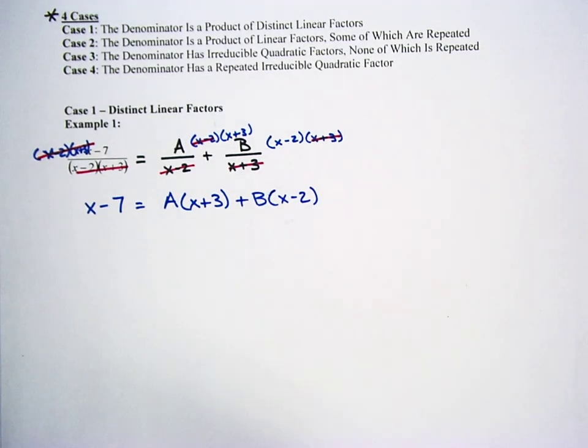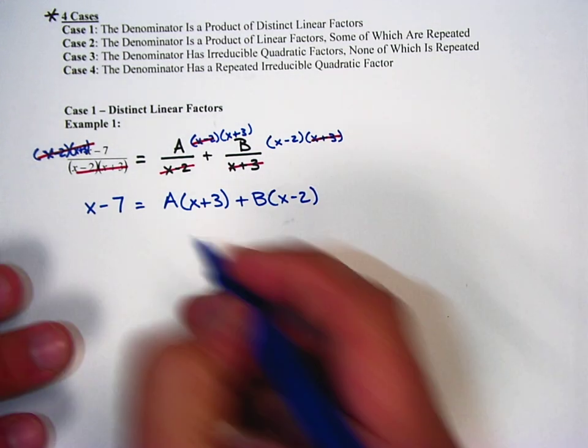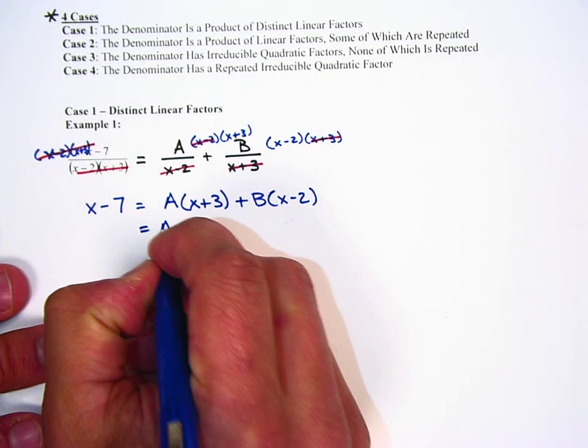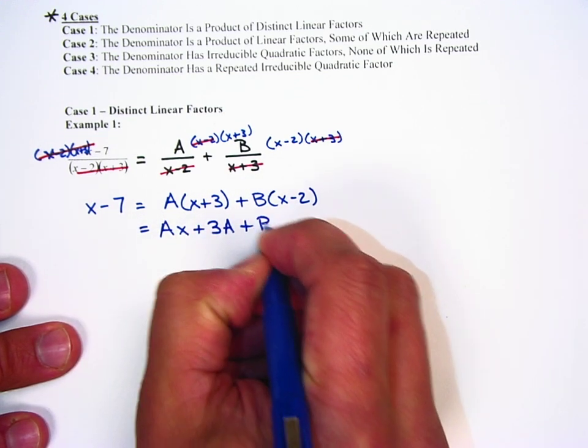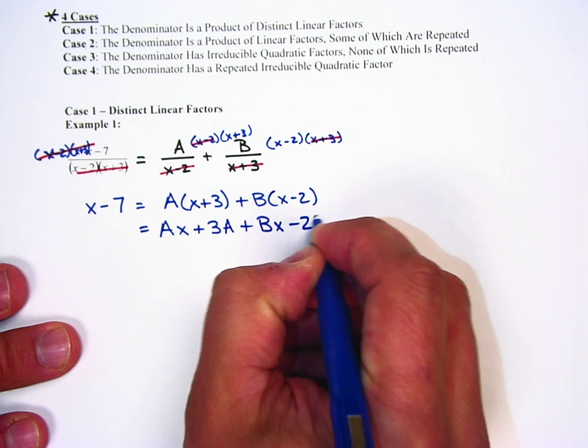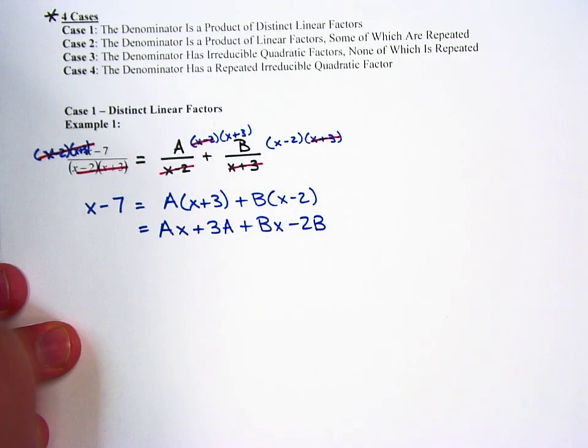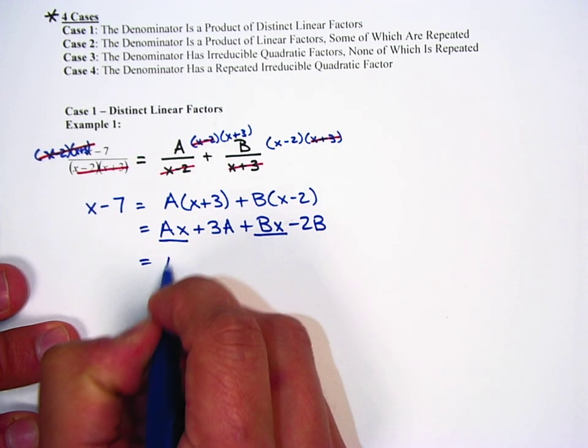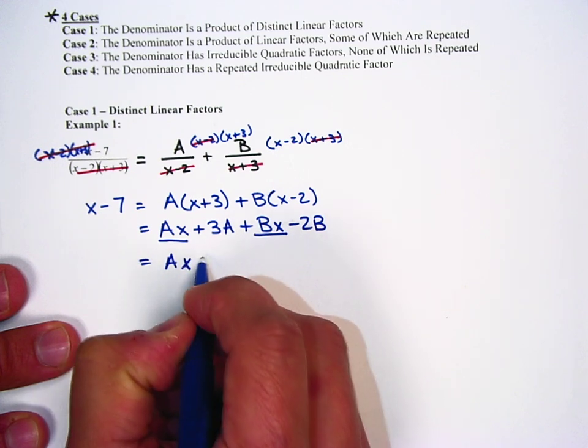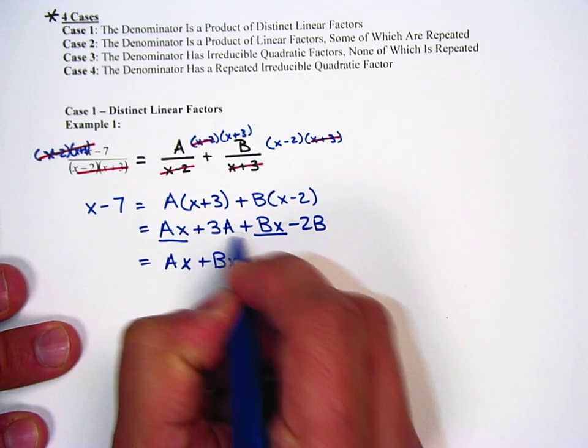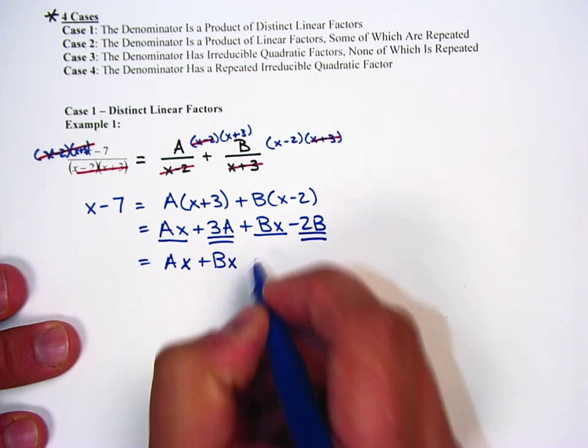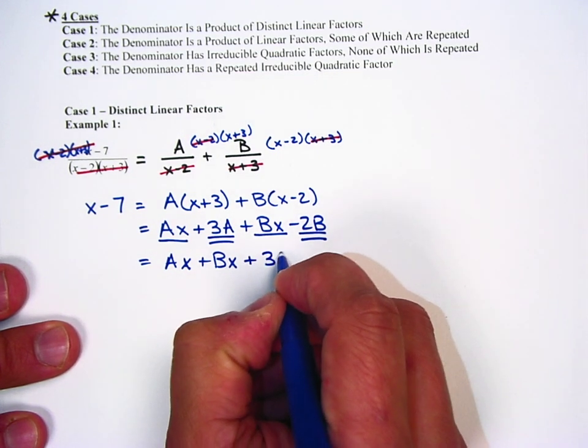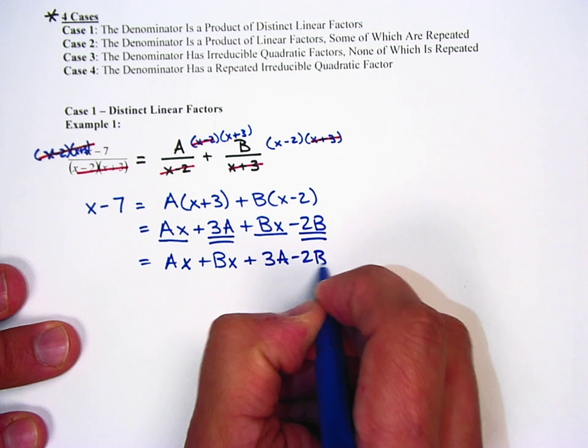From here, it's just a matter of solving for A or B. We're going to do that by distributing the A and the B. So we get Ax plus 3A plus Bx minus 2B. Combining like terms, I got Ax and Bx, so I'll put those together, Ax plus Bx. And then 3A and negative 2B are constants. So I got plus 3A minus 2B.